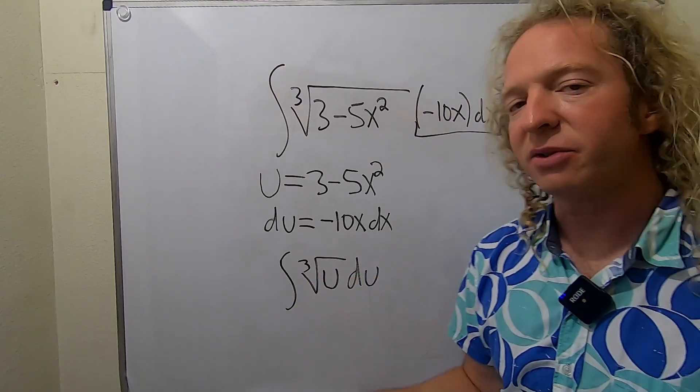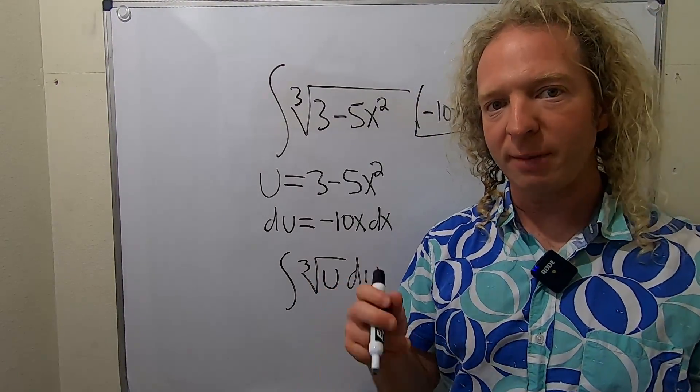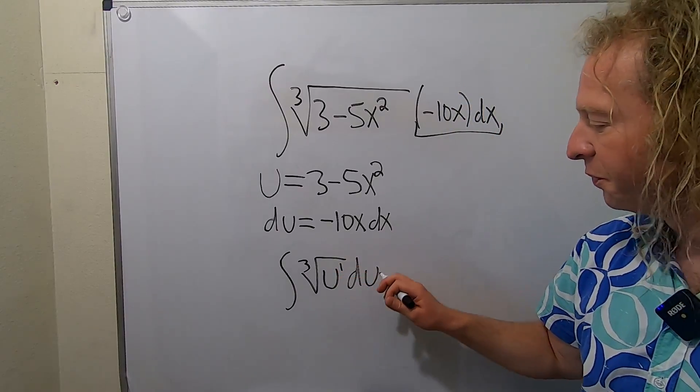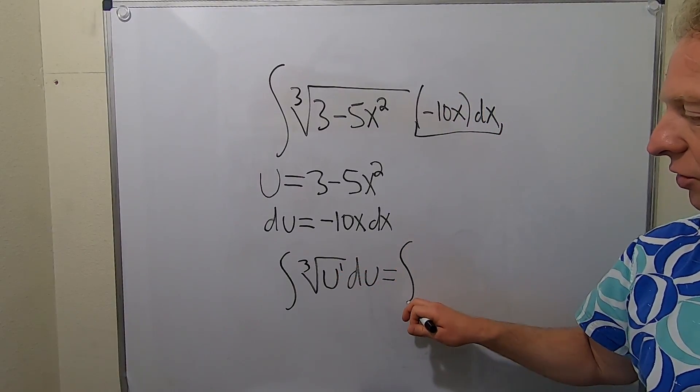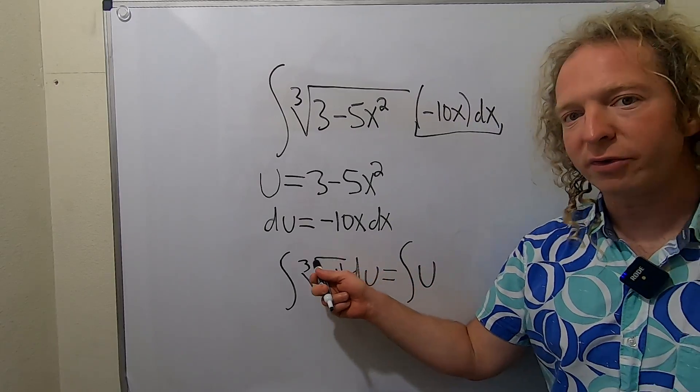So now we have to integrate this, so you have to rewrite this as u to a power. So there is a 1 here, so you can write this as the integral of u to the 1 over 3.